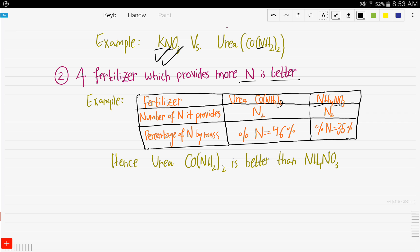Here is an N and here is the other one. But when it comes to the percentage of N by mass, the urea provides 46% of nitrogen, whereas ammonium nitrate provides 35% of nitrogen. Therefore, urea is better than ammonium nitrate and should be the fertilizer that you should buy.